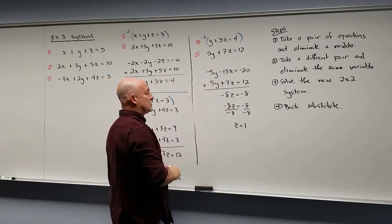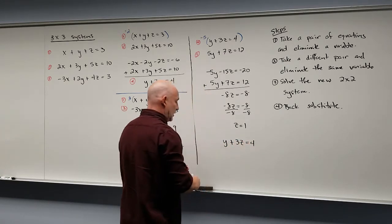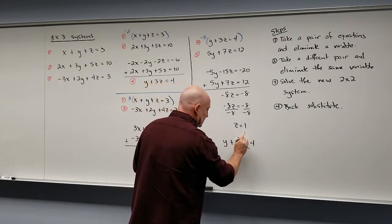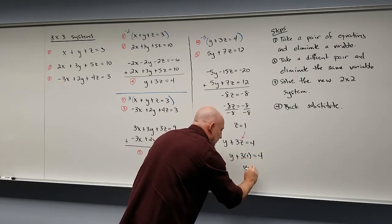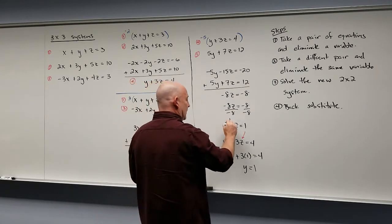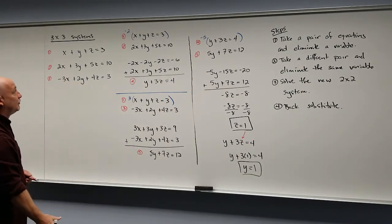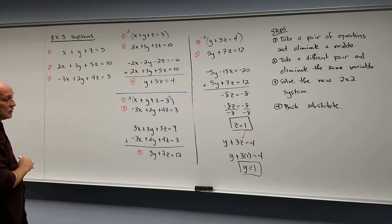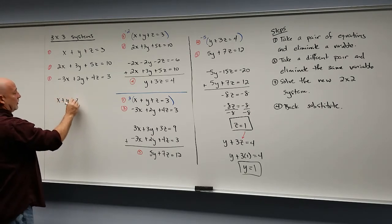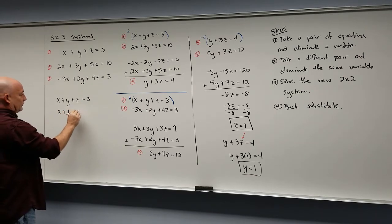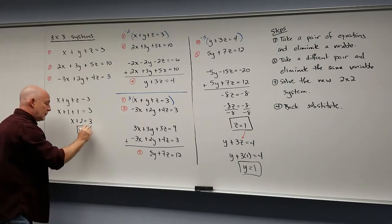Once we have one value, we plug it back into one of the equations. I know y plus 3z equals 4. Plugging in z equals 1: y plus 3 times 1 equals 4, so y equals 1. Now we have two values and just need the third. We back substitute into one of the three original equations. Using equation 1: x plus y plus z equals 3, so x plus 1 plus 1 equals 3, meaning x plus 2 equals 3, so x equals 1.